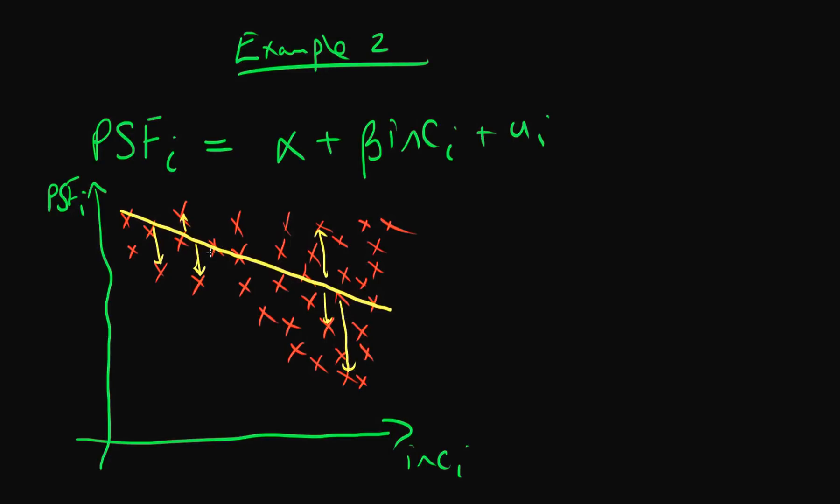Well, why might that be? Well, if an individual has a higher level of income, he might be a foodie. So it might represent this individual here. So they might still spend a high percentage of their income on food.